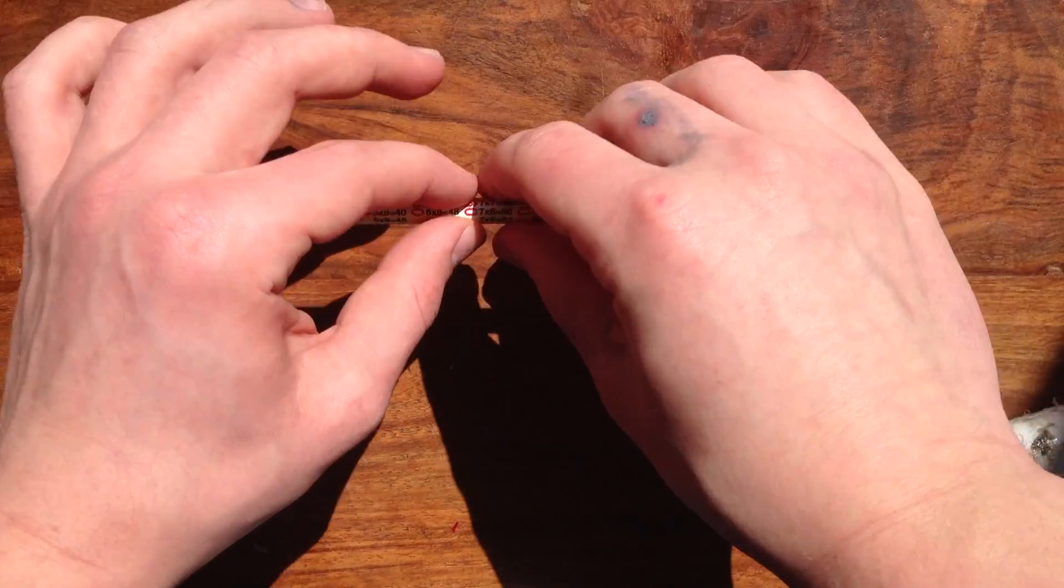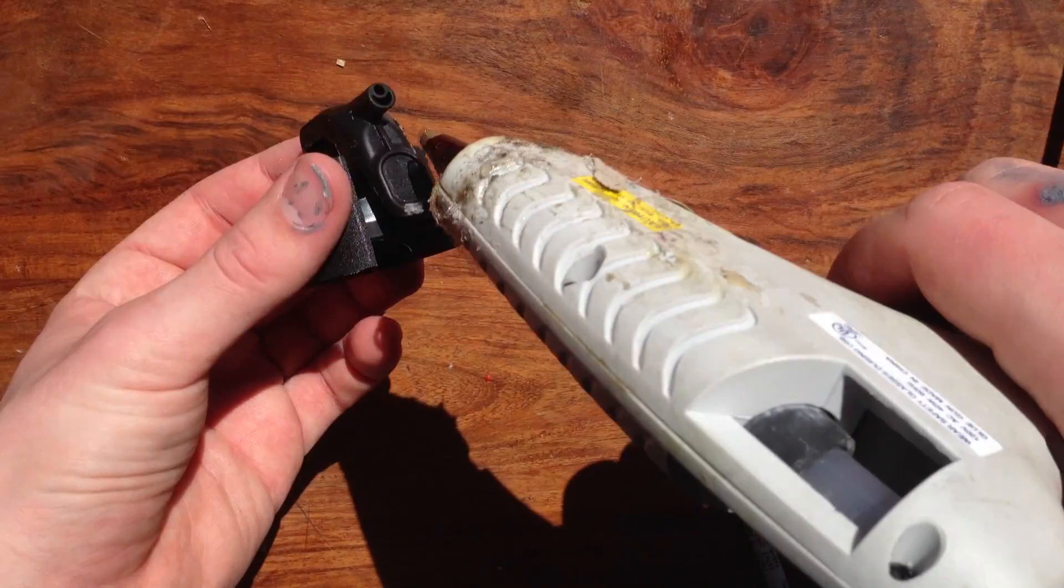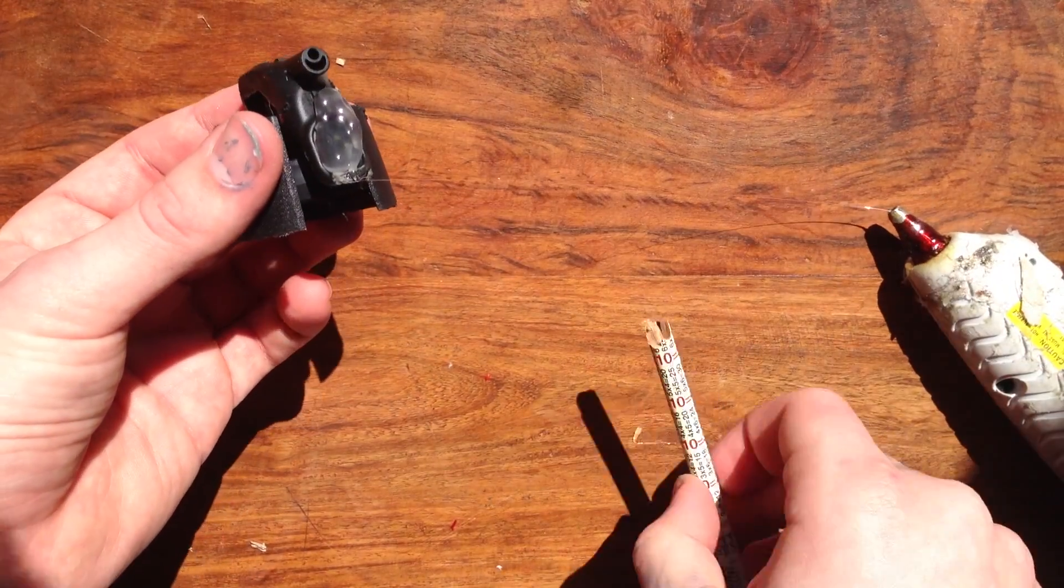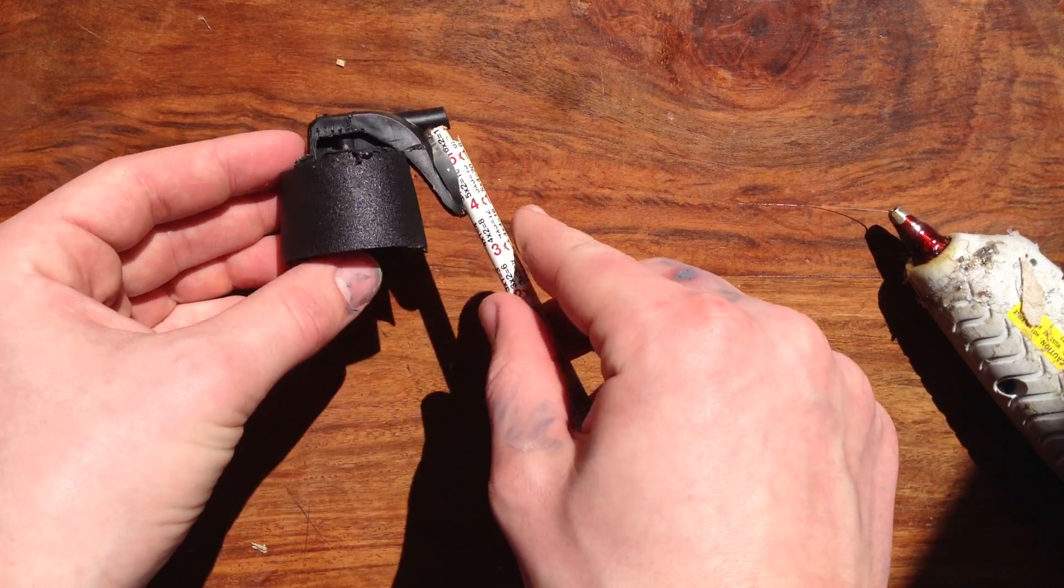Next, take your pencil and break it down to about five inches long. Take the top of your canned air and place a lot of hot glue on the nozzle. Then, press the pencil into the hot glue and make sure it's secure.